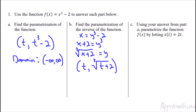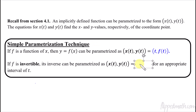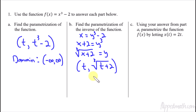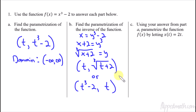There's actually a much easier way to do this. If you can take the inverse, the inverse parametrization technique is just to swap the coordinate positions. So instead of finding the inverse first, I can take the original parametrization — t comma t cubed minus 2 — and just swap it to get t cubed minus 2 comma t. The domain is all real numbers. Graphing both gives identical results, so swapping the x and y in the parametric form gives you the graph of the inverse.